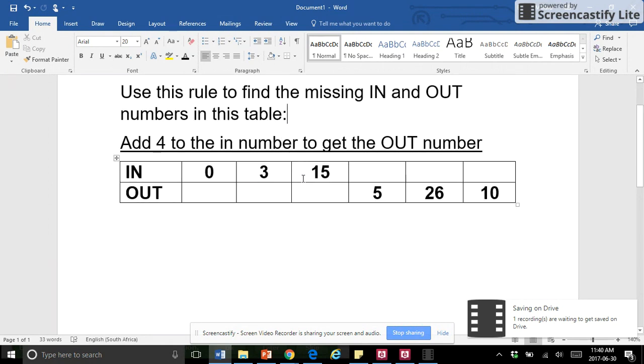So we'll start at the beginning because we've got some IN numbers here as we normally did. Okay, so we would go 0, add 4, equals 4. So we stick a 4 in there.